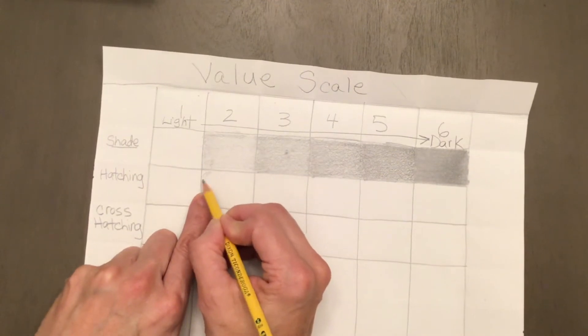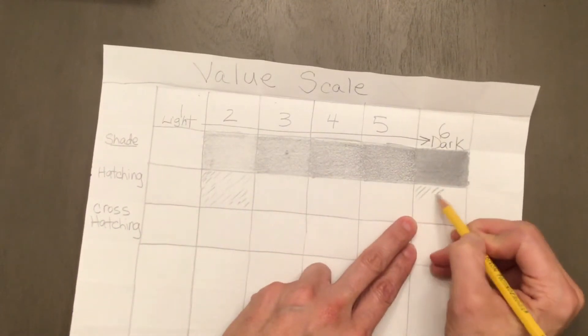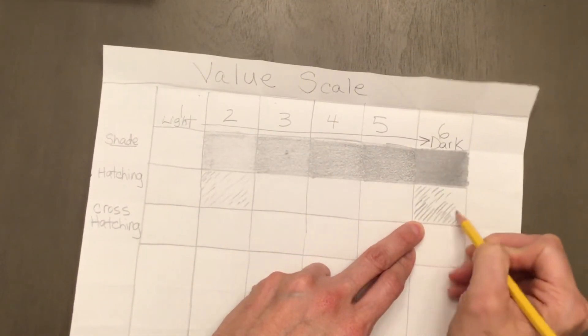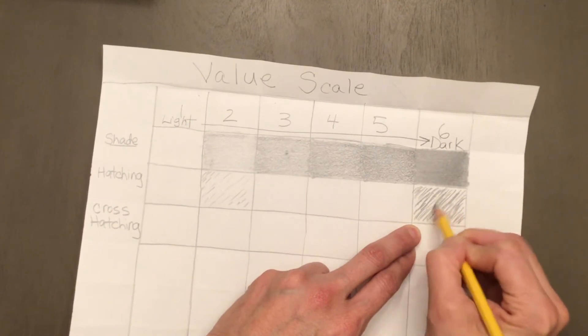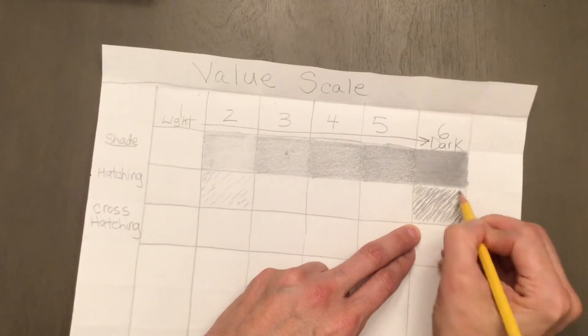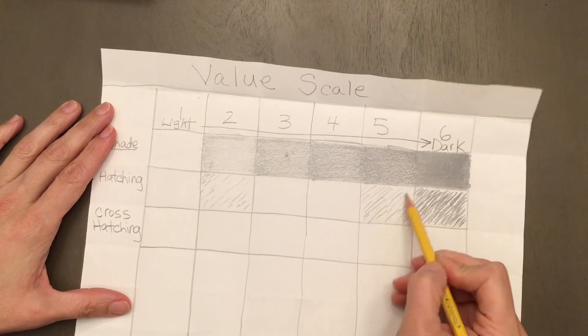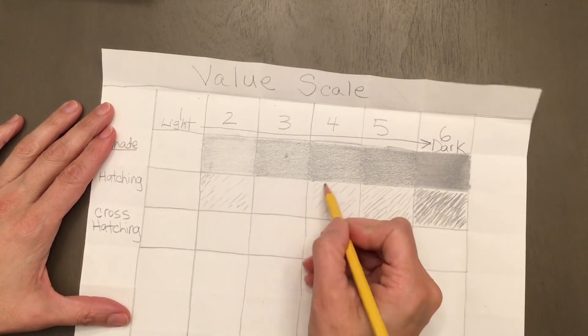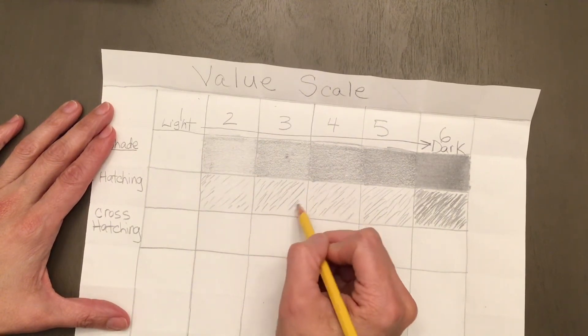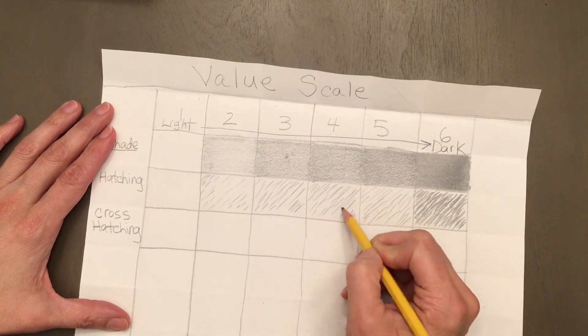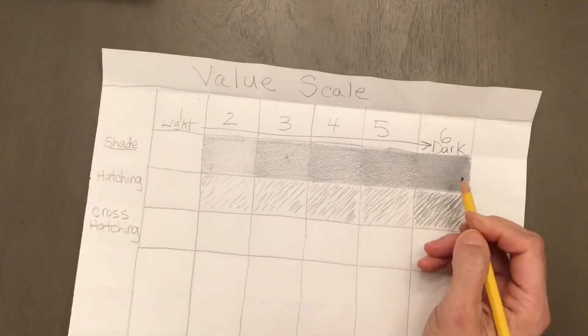Now we're going to start with the hatching. Hatching is going to be little tiny lines next to one another. To make the value lighter, the lines will be further apart. To make the value darker, the lines will be really close together, always in the same direction. Take a look at the right two.